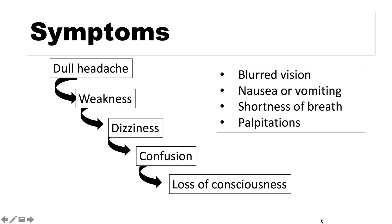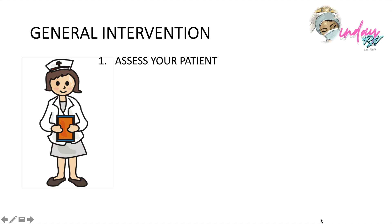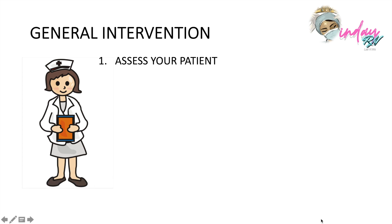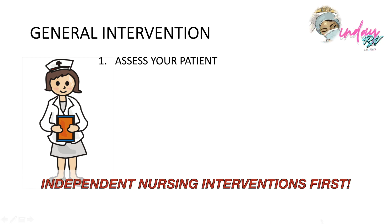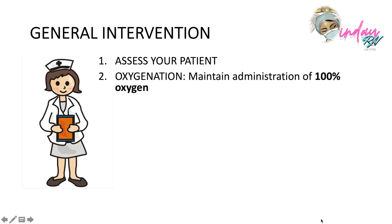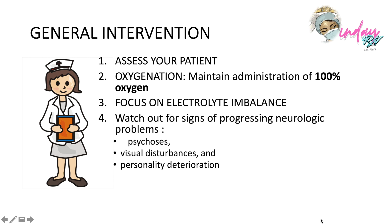For general interventions while caring for patients with carbon monoxide poisoning: always assess the patient's condition, especially level of consciousness, and perform independent nursing interventions while informing the physician. Maintain 100% oxygenation. Focus on electrolyte imbalance — that is why ABG monitoring is always done. Watch out for signs of progressing neurological problems such as psychosis, visual disturbances, and personality deterioration.